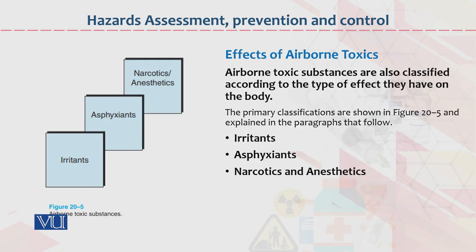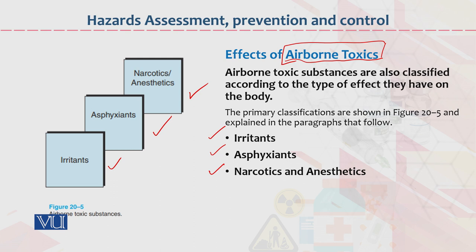Dear students, effects of airborne toxics kya hain? Airborne toxic substances are also classified according to the type of effect they have on the body. The primary classifications are shown in figure 20.5 and the paragraph that follows. Number 1: irritants. Number 2: narcotics and anesthetics. Yeh jo irritants aur baqi categories hain, in ki wajah se yeh chizein paida hoti hain. Agar airborne toxics ko analyze kiya jaye, assess kiya jaye, phir un ko control kiya jaye, toh kaafi haad tak in se bacha ja sakta hai.